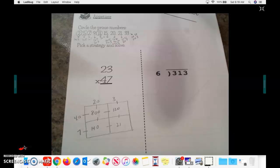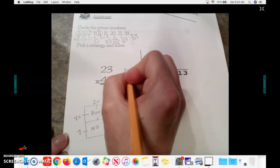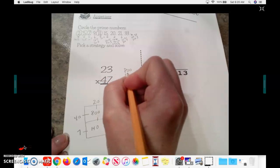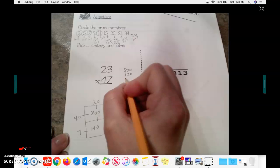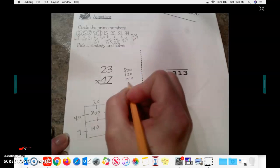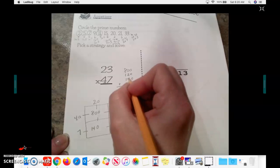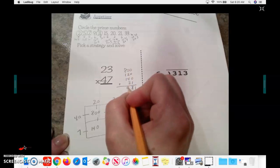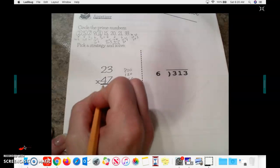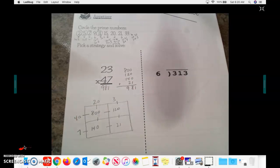And then the biggest hangup is making sure that when you go to add these numbers up, that everything lines up. So I have 800, 120, 140, and 21. 1, 4, 5, 6, 7, 8. 8, 9. So 981 should be the correct answer.